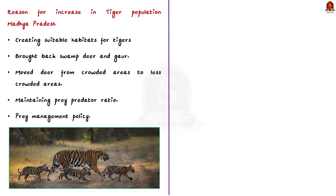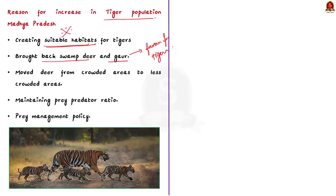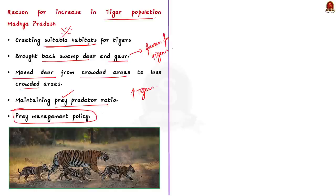What Madhya Pradesh government did is very simple. Rather than focusing just on tiger numbers, they focused on creating suitable habitats for tigers. The government brought back certain animals like swamp deer and gaur to new places where tigers can have them as food. They also moved deer from crowded areas to less crowded areas by catching and releasing them in better spots. This helped to keep the balance between tigers and their prey, which in turn resulted in an increased number of tigers. This is called the prey management policy.